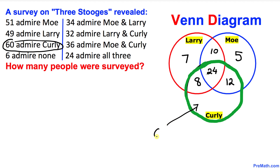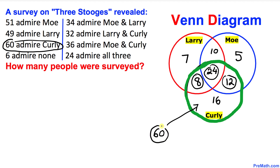Now let's focus on the 60 that admire Curly. In the Curly region we can see 8 plus 24 plus 12 — that's 44 people already inside — so we add 16 more, and all the numbers in that region add up to 60.